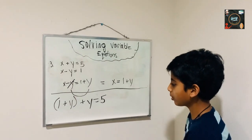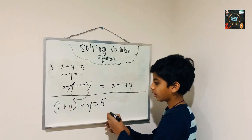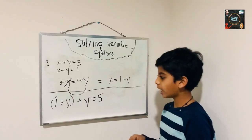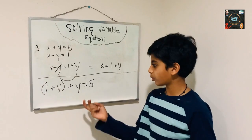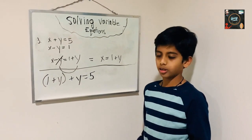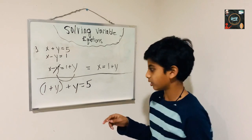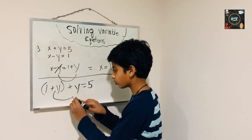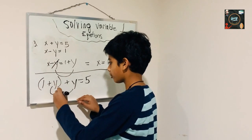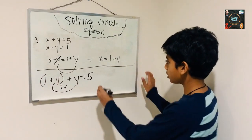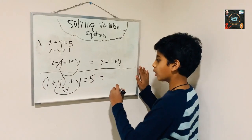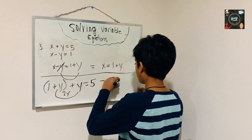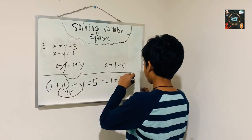Now, remember when we have the same variables we have to add them together. So let's add y and y, which gives us 2y. So the equation becomes: 1 plus 2y equals 5.